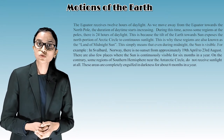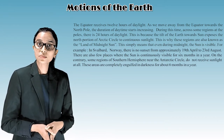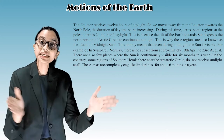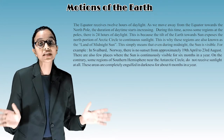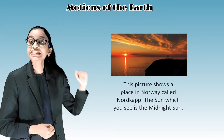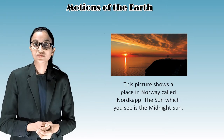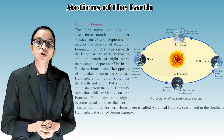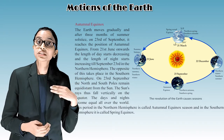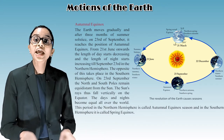There are also few places where the sun is continuously visible for 6 months in a year. On the contrary, some regions of the southern hemisphere near the Antarctic Circle do not receive sunlight at all and are completely engulfed in darkness for about 6 months in a year. This picture shows a place in Norway called Nordkap — the sun visible is the midnight sun. Autumnal equinox: The earth moves gradually, and after 3 months of summer solstice, on 23rd September, it reaches the position of autumnal equinox.